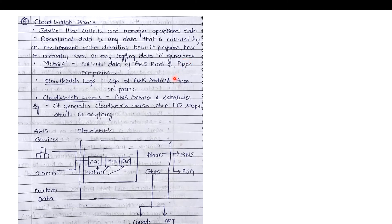Here we have three terminologies: metrics, CloudWatch Logs, and CloudWatch Events. Metrics collects data from your AWS products, applications, or even your on-premises servers.